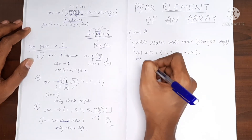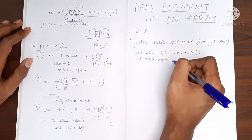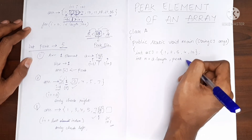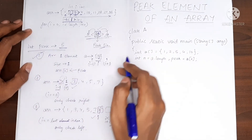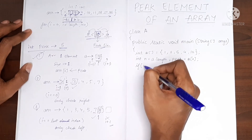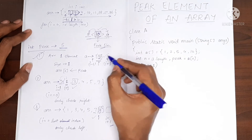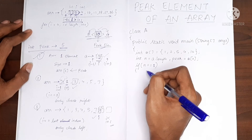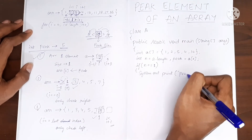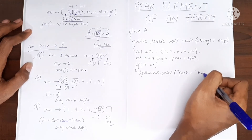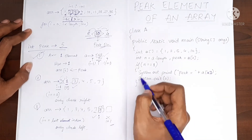I am creating a variable called n which will be the length of the array, so n = a.length. Now I have a variable called peak which will initially be the first value of the array. For case number 1 — if the array has only one element — if n == 1, it means the array has only one element, so we print the only element present in the array as the peak and exit the program. Case number 1 is done.